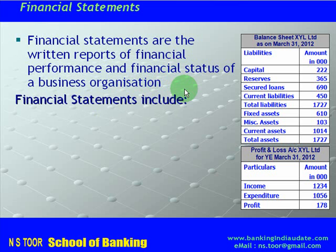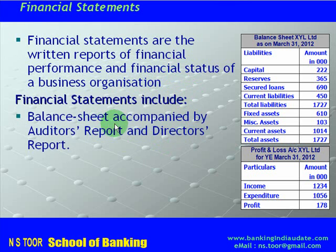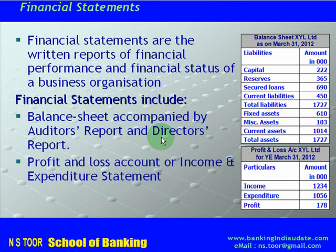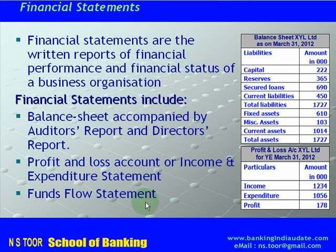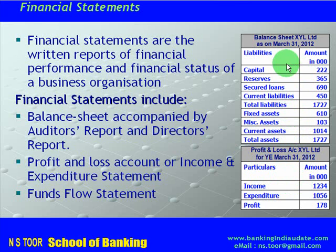Financial statements include: 1) Balance sheet, accompanied by an auditor's report or a director's report. 2) Profit and loss account or income expenditure statement. 3) Funds flow statement. Certain financial statements provide information about performance, like profit and loss account, and certain statements provide information about financial status, like the balance sheet.